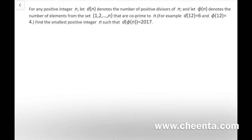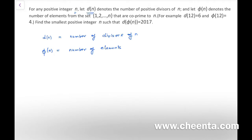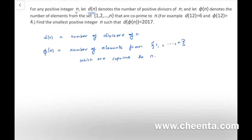For any integer n, d(n) is the number of divisors of n, and φ(n) is the number of elements from 1 to n that are co-prime to n — meaning that number and n do not have any common divisor. How many such numbers are there?